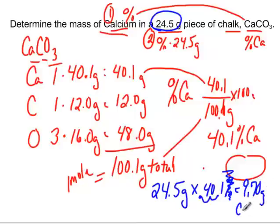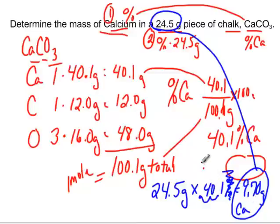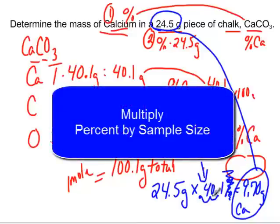And this is how many grams of calcium are in this particular sample size. Now remember if that sample size is bigger or smaller, this amount will change, the amount of calcium in there, but the percentage will always stay the same. So we can use that percentage to figure out how much calcium is in any sample size, regardless of how big or how small it is. Just multiply percent times sample size.